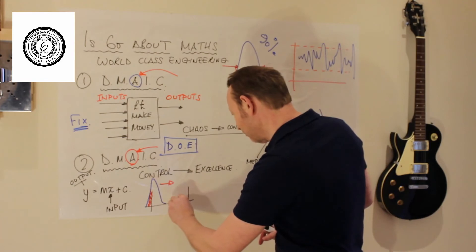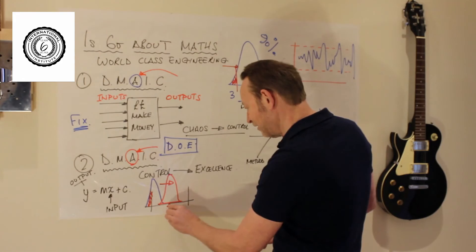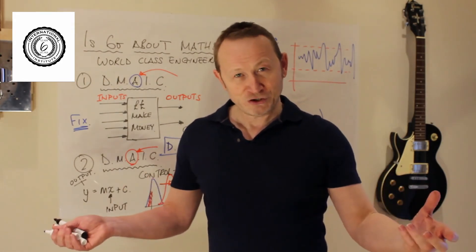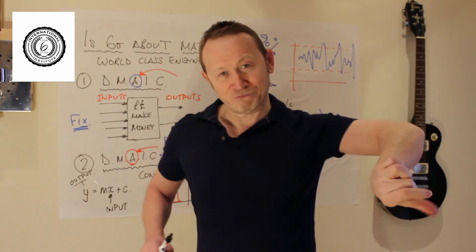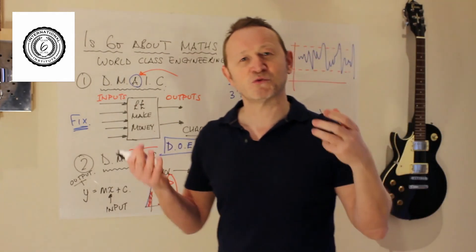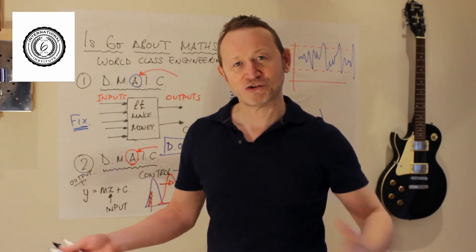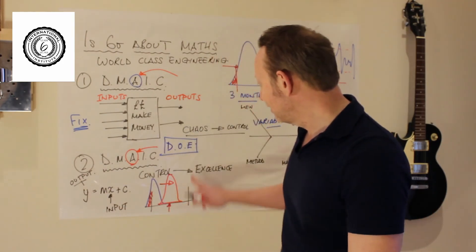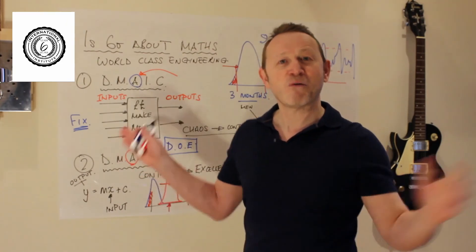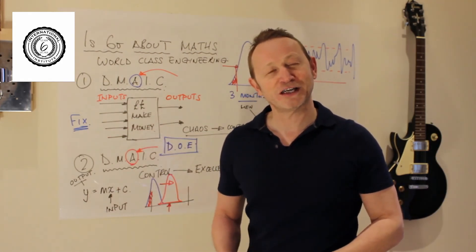So for example, maybe your process is already sitting in control, slap bang in the middle of the tolerance, exactly where you want it. But unfortunately, you've got everything turned up full. Temperatures up full, speeds up full, pressures up full. But you'd love to hit this target with cheaper settings. Faster, better, lower energy, cheaper material maybe. DOE is brilliant at finding the cheapest settings in the complex world of millions and millions of combinations that could be over here on your inputs.